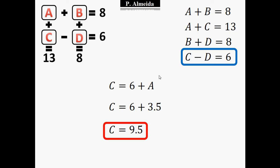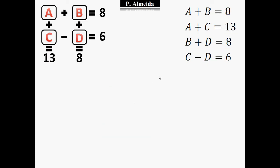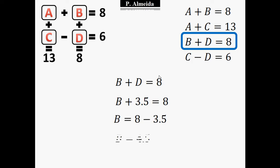So I just need to get the last number. So now to get the last number, again, I have all the equations in here. I'm going to use the third equation that says B plus D equals 8. So B plus 3.5 equals 8. So B is going to be 8 minus 3.5. So B is equal to 4.5. And there you go, you have all the answers.